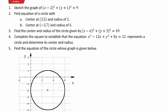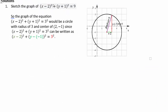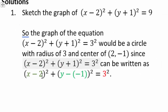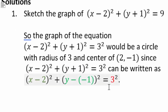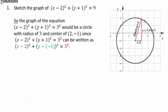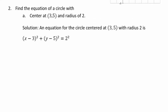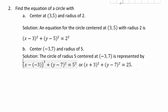For (x−2)² + (y+1)² = 9, the center is (2, −1) and the radius is 3. Plot and connect all the points to get the circle. To find the equation when the center is (3, 5), we have (x−3)² + (y−5)² = 4. The other one with center (−3, 7) gives (x+3)² + (y−7)² = 25.